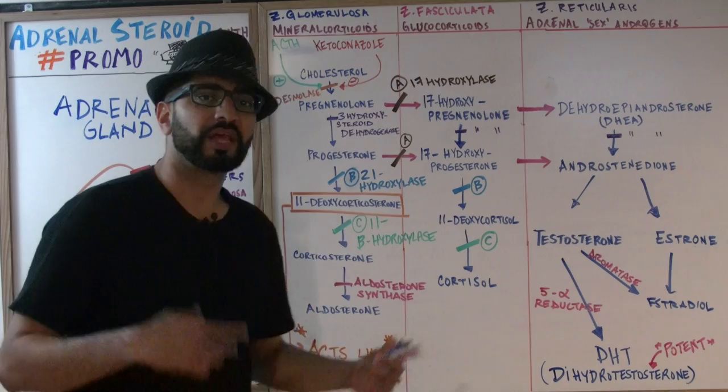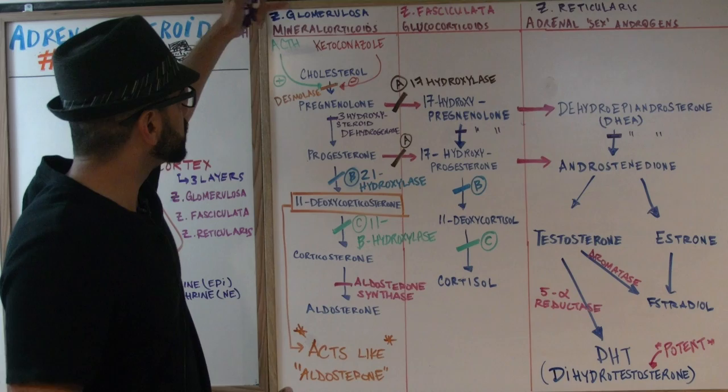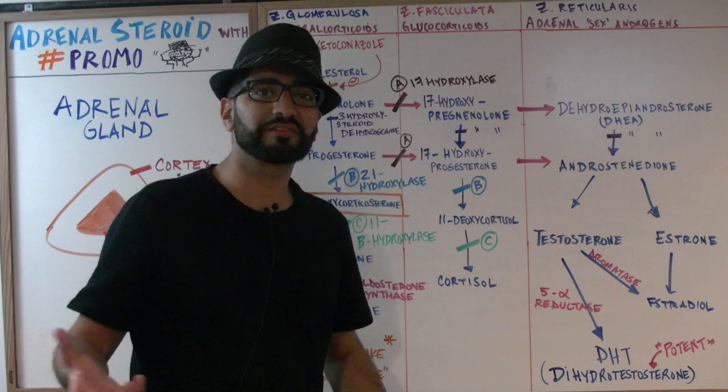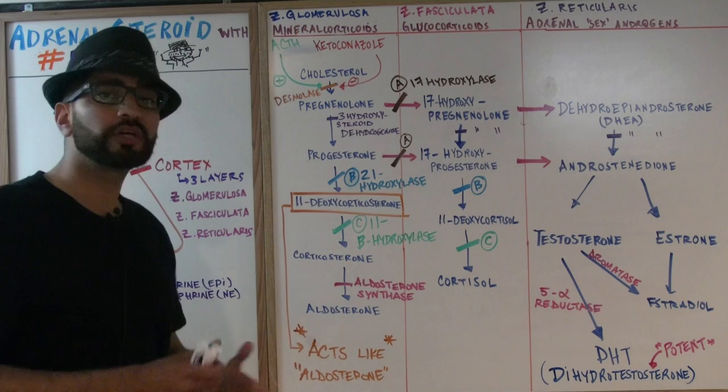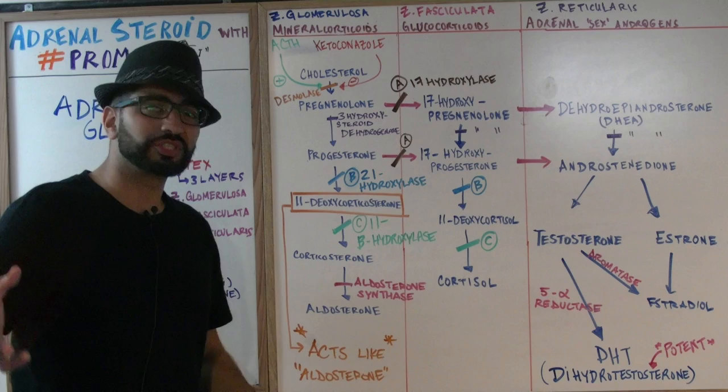The best way to understand this chart is column by column. You've got three columns: zona glomerulosa, zona fasciculata, and zona reticularis, each representing different layers of the cortex. The zona glomerulosa produces mineralocorticoids, and our main mineralocorticoid is aldosterone. Aldosterone works on the kidneys — it retains sodium, gets rid of potassium, and gets rid of hydrogen ions. Cholesterol needs to be converted into pregnenolone by an enzyme called desmolase.